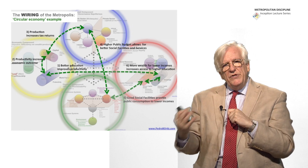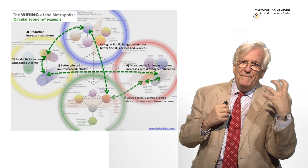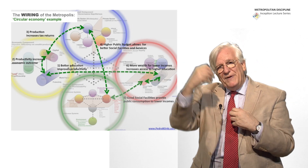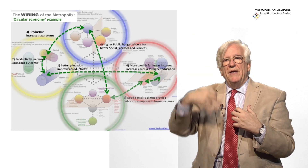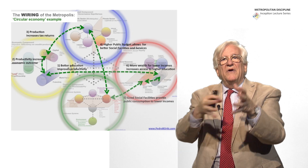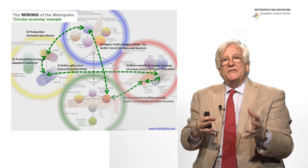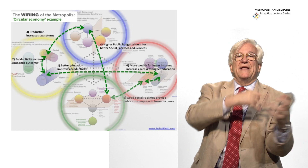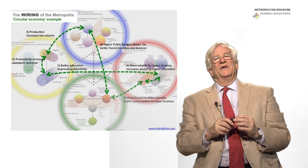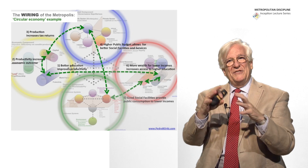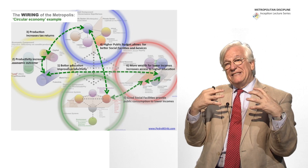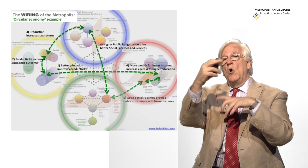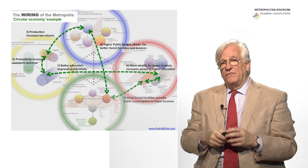We saw how an increase of education will make more efficient the economy, a more efficient economy will be able to pay higher taxes, higher taxes will be able to provide social facilities in the physical environment — more universities, more schools, and so on — and how that will improve the capacity of education of the population. The circular economy, now a word very much in fashion, has the implications of the decision of the decision maker of the metropolis all around, even if it's just from the physical component.